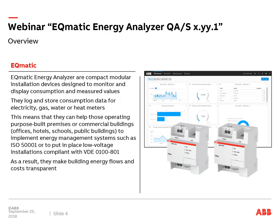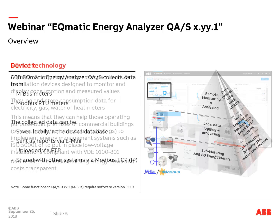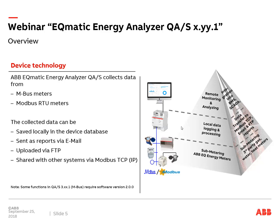When we talk about energy, we don't mean only electrical energy — we also mean water, gas, or heat. The QAS Energy Analyzer solutions come in different types of devices for MBUS or Modbus, depending on your country's preference. On Modbus or MBUS, we connect different meters — ABB EQ energy meters or also third-party meters for gas, water, heat, and so on. These devices send values via the bus to our Energy Analyzer QAS.